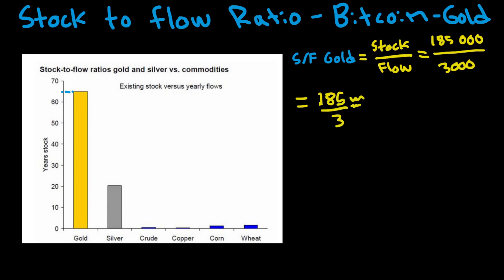So the stock-to-flow for gold is 185,000 divided by 3,000, which equals around 62. As we can see on the graph it looks to be a bit higher, but it's around 62. What this means is that if we assume the same annual flow of 3,000 tons of gold, it would take 62 years to double the gold supply — making gold a very scarce metal.